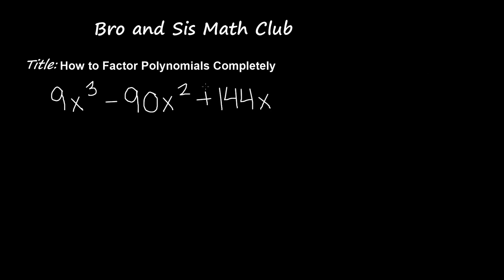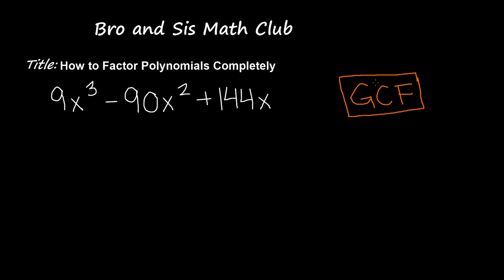So here's a trinomial. This is a trinomial because it has three terms. The first step in factoring a polynomial completely is to find the GCF. So we have to find the GCF of this trinomial.